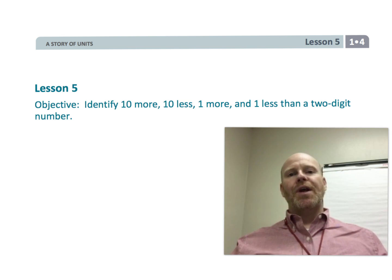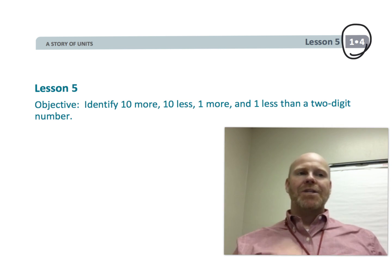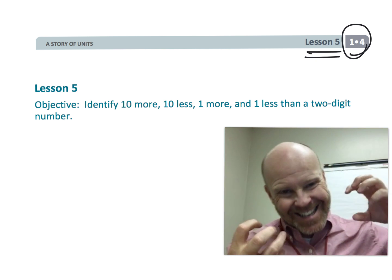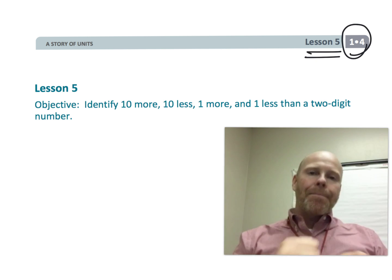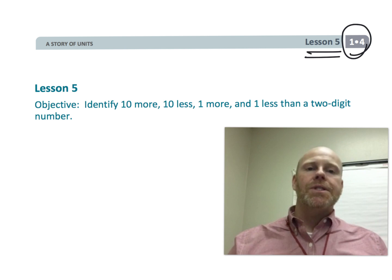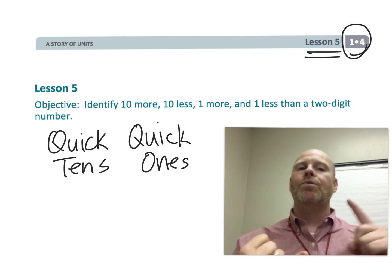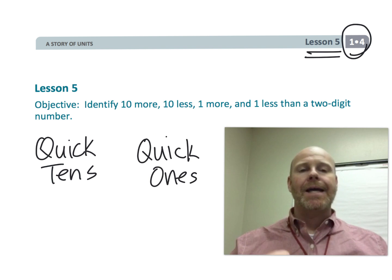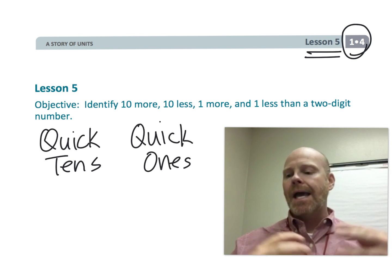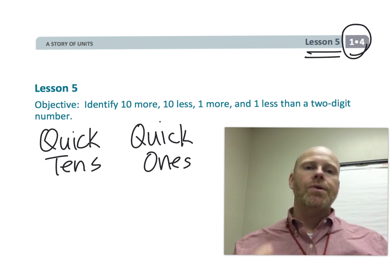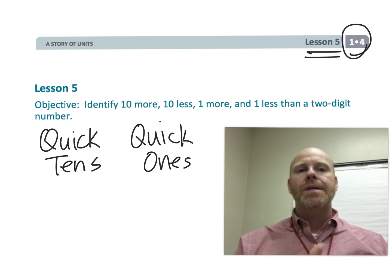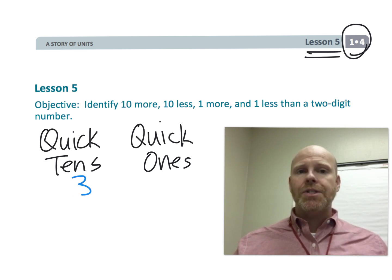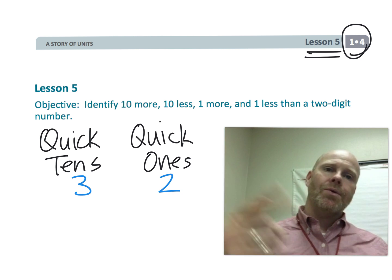This is first grade, module four, lesson five. In this lesson, we are giving students yet another way to represent a two-digit number. This time we're talking about quick tens and quick ones, and the idea is to use those quick tens and quick ones to quickly represent two-digit numbers. So let's get started.